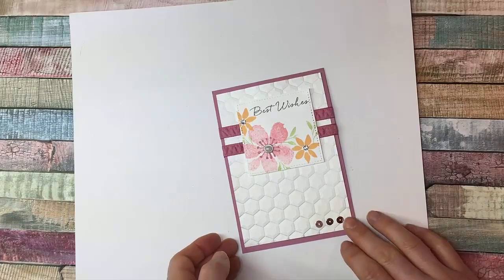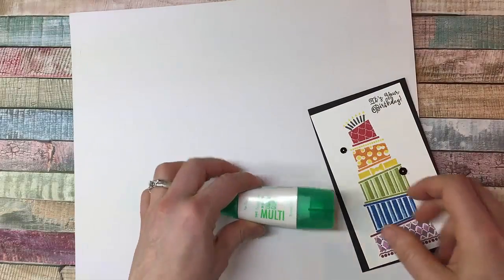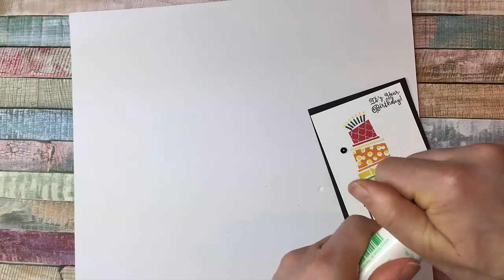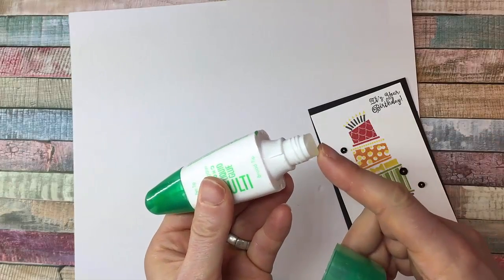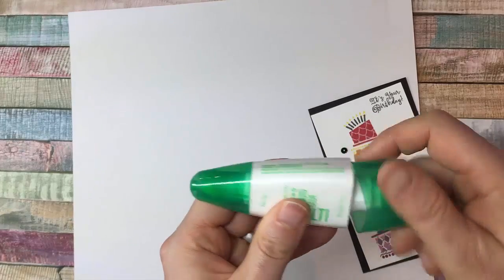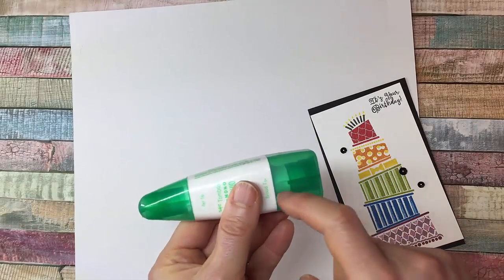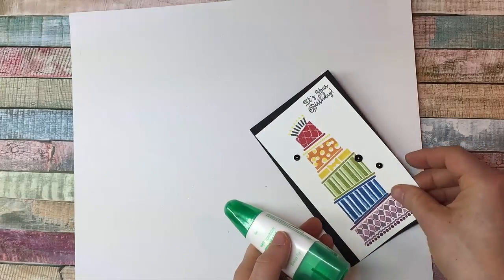Next, we will do our Tombow liquid glue. This is one of my personal favorites. So with this one, I just want to point out you have a fine tip and then on the other end you have a thicker tip. A lot of people don't even realize this is there. Sometimes when the bottle is nearly empty, because you can store it like this, you'll be able to get glue out of this end even when this one is proving more difficult.